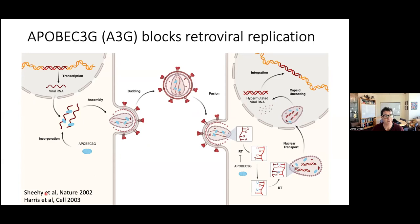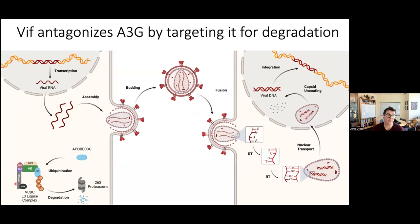What VIF does — all extant lentiviruses encode a VIF protein that hijacks a ubiquitin E3 ligase, a cellular E3 ligase, to target APOBEC3G for degradation by the proteasome. So in the presence of VIF, APOBEC is ubiquitinated and therefore not packaged. Therefore cDNA synthesis proceeds normally without hypermutation, and the virus survives.